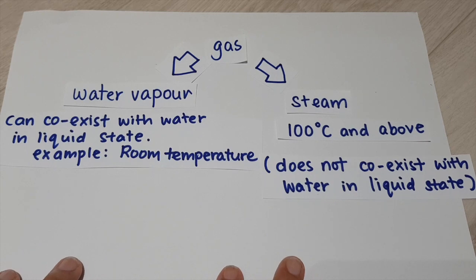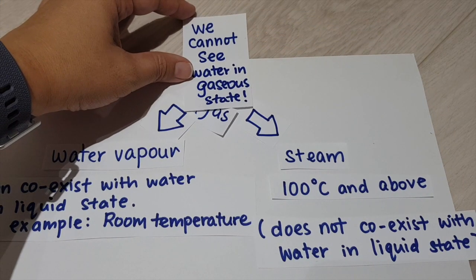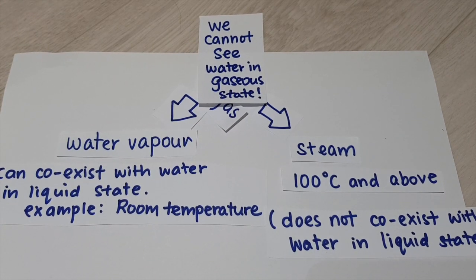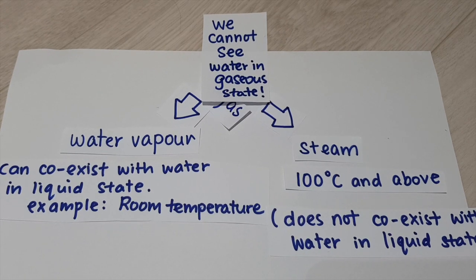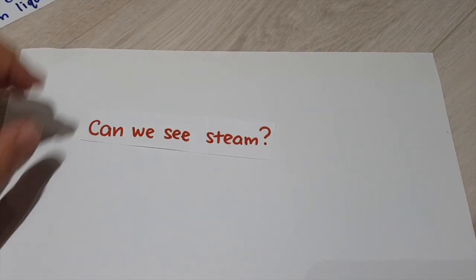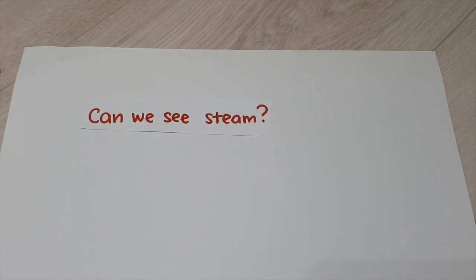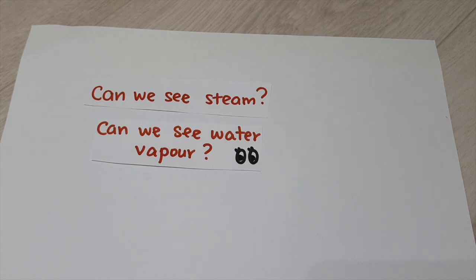One thing that all of you must be very clear with is that we cannot see water in the state of gas. We cannot see them at all. They are in the air. They are not visible to our naked eyes. Let's do a little recap now. Can we see steam? Can we see water vapor? The answer is no. We cannot see them at all.